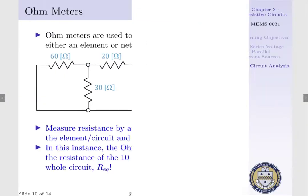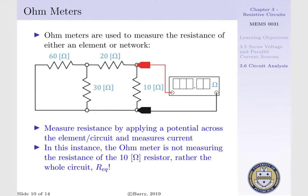That is to say, our ohmmeter is not measuring the resistance solely of our 10 ohm resistor, even though the leads are applied across said resistor. Rather, it's measuring the equivalent resistance of the whole circuit.